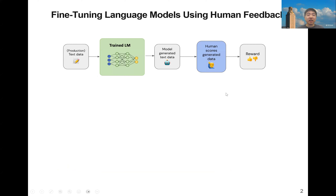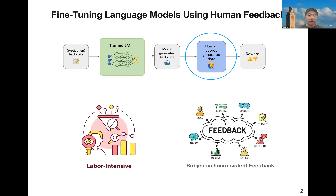Nowadays, there are a lot of fine-tuning algorithms using human feedback for large language models, where they use human scores to generate data. However, those fine-tuning algorithms are labor-intensive because they rely on real humans to do the scoring. Also, humans may provide inconsistent feedback.